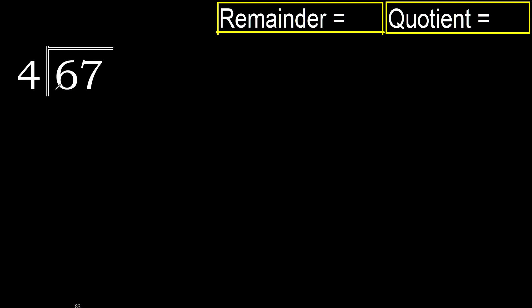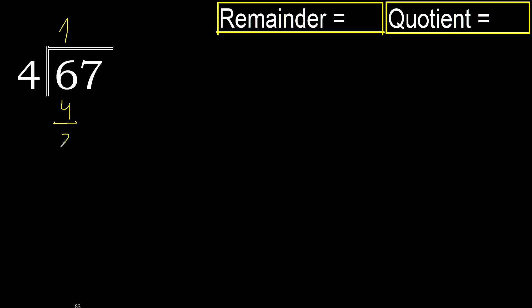67 divided by 4. 6 is not less, therefore with 6, 4 — multiply by which number is nearest to 6 but not greater. 4 multiplied by 2 is 8, which is greater. Multiply by 1 is 4. 4 is not greater. 6 minus 4 is 2.